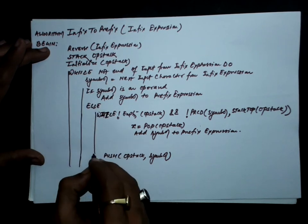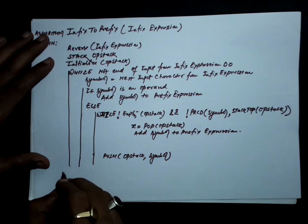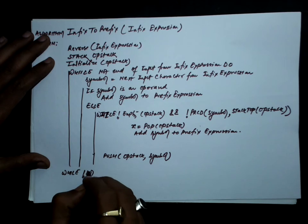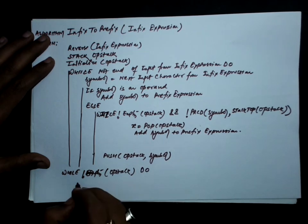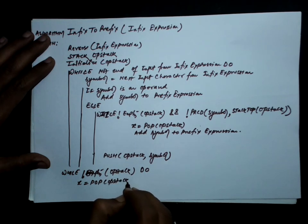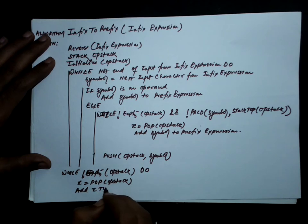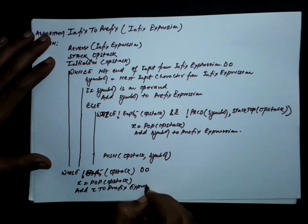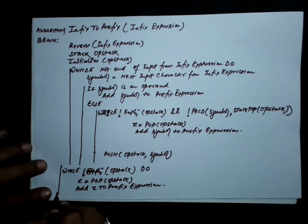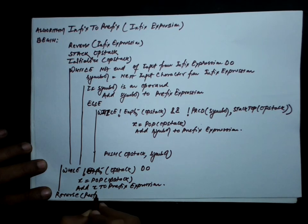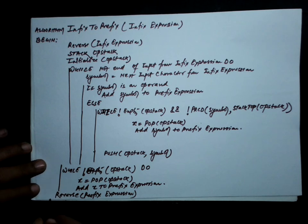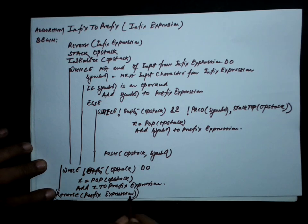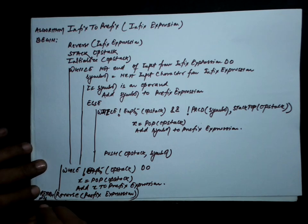After taking all the symbols and reaching end of input, pop the stack one by one. While the stack is not empty, pop the stack and add the popped symbol to the prefix expression. Having done this, reverse the prefix expression once more. So you reverse twice — once at the beginning and once at the end. Reverse the prefix expression and return it. That completes the algorithm.